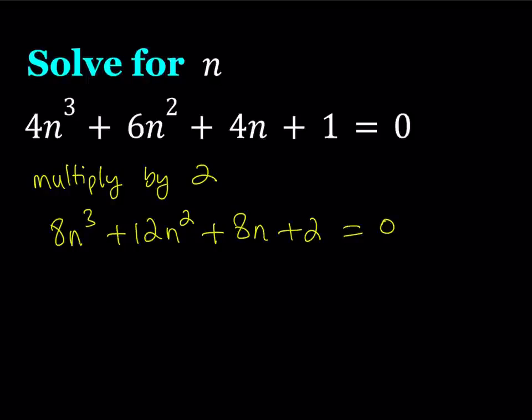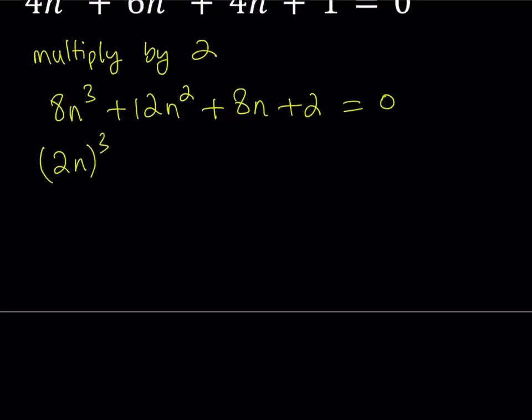Notice that 8n³ can be written as (2n)³. Now we want to do the same thing to all the terms. All the coefficients are even here, so I can write this as (2n)² multiplied by 3 to make 12n². Then 2n must be multiplied by 4 to get 8n, and 2 is our constant.